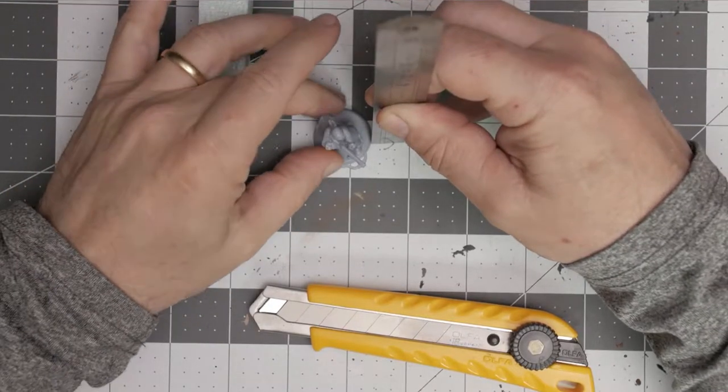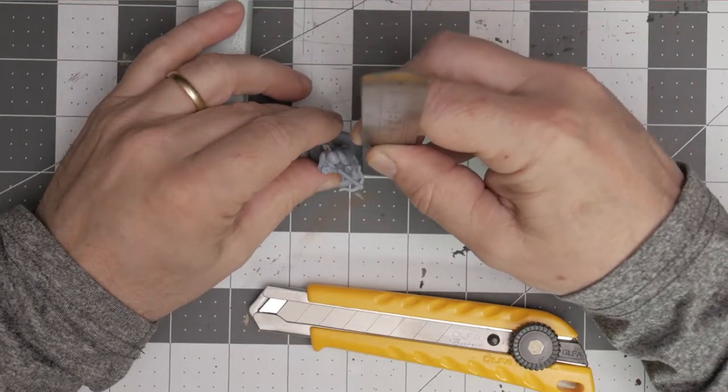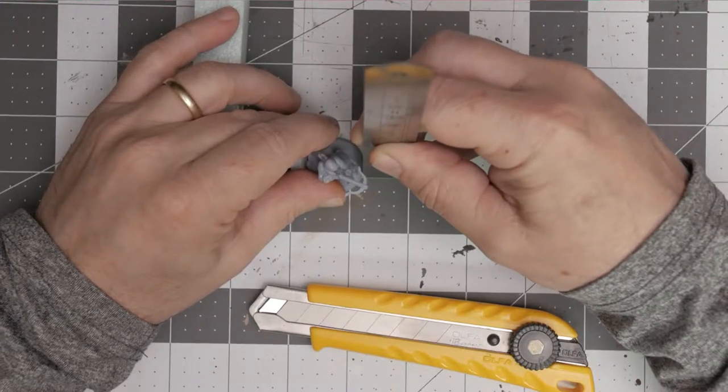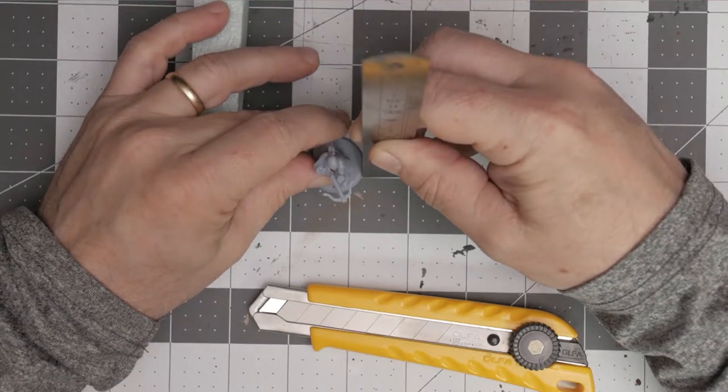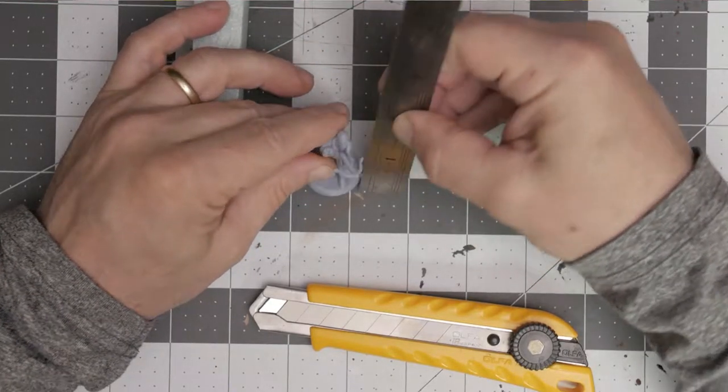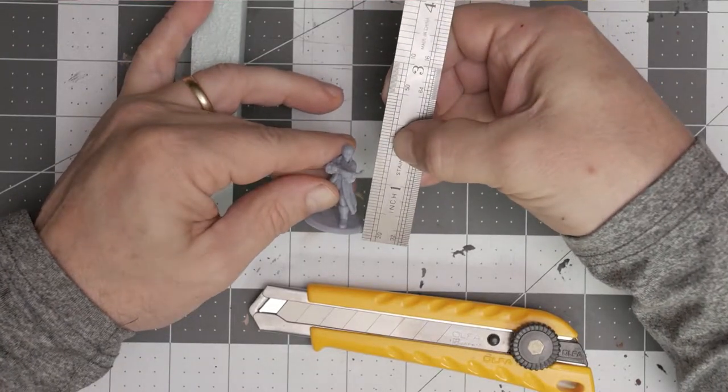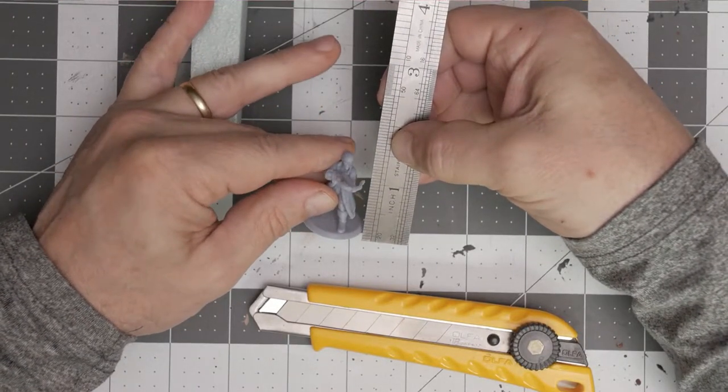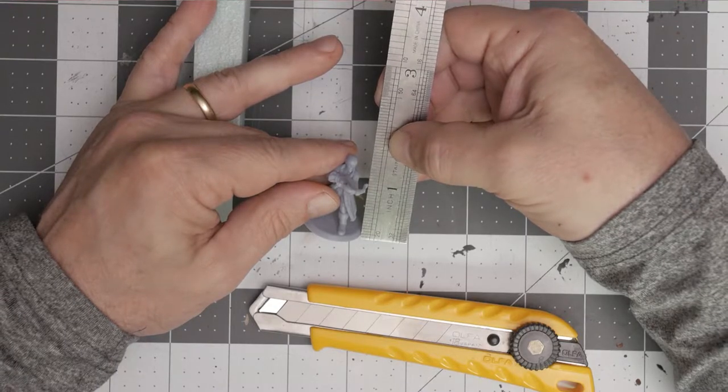Welcome back to Tabletop That. This week, we're going to look at doing some entryways. Here I have a 28 millimeter miniature that comes in at about an inch and a half, something like that.